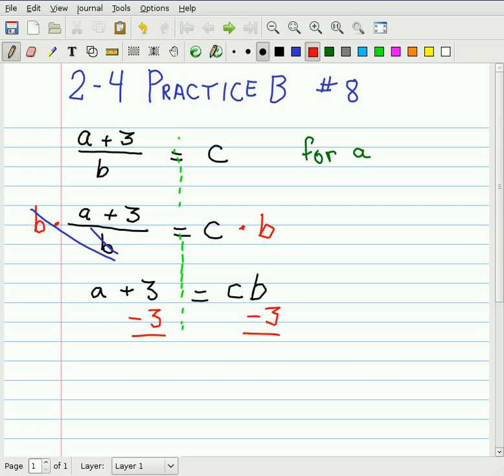The 3s on the left side cancel out, make 0, and I'm left with just a, which is what I want, a equals.